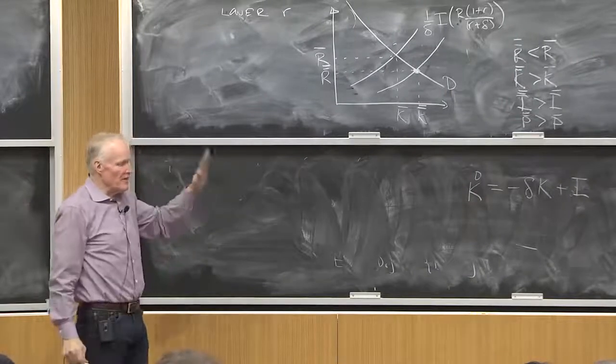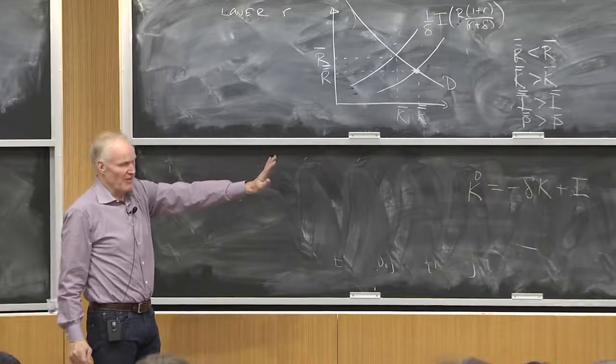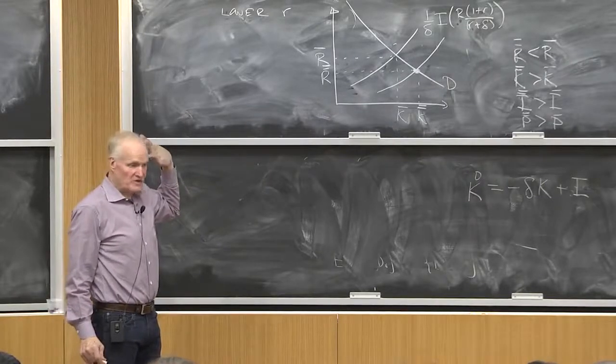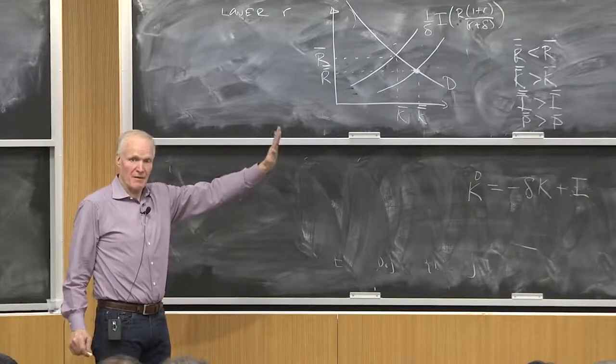We didn't get to the steady state even if we learned like a thousand years in advance. Right? Even if we learned that demand was going to go up in 2006, a thousand years earlier, we still wouldn't build the new steady state stock by 2006.